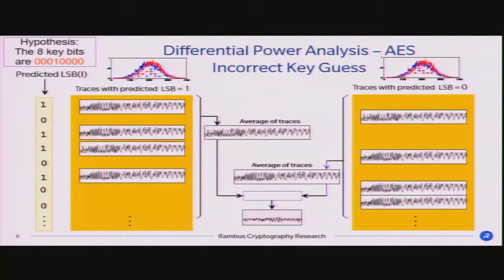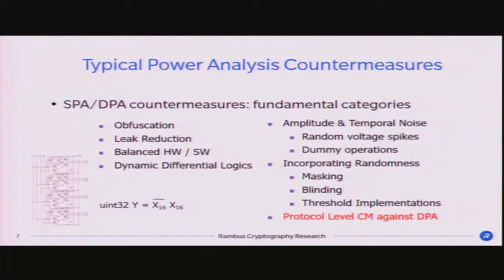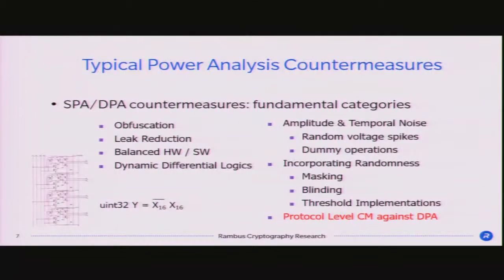What do you do to counter these types of attacks? There are very classical countermeasures described in more than 10,000 papers. You can do obfuscation, reduce the leak, balance your designs, introduce differential logic styles, add temporal noise, amplitude noise, dummy operations, or add randomness to de-correlate your data from the secret.